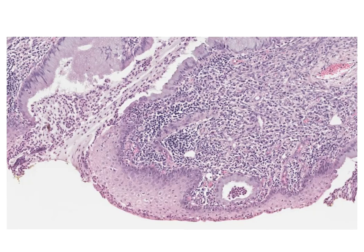As the SCJ shifts, the area between the old SCJ and the new SCJ is called the transformation zone. Here is the original SCJ on the left and the new SCJ on the right, with the transformation zone in the middle. In the transformation zone, the columnar epithelium is being replaced by new metaplastic squamous epithelium. The transformation zone is where over 90% of squamous cell carcinomas and dysplasia occur.